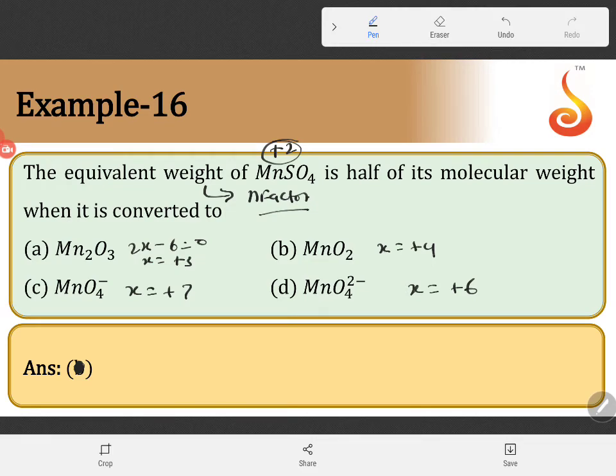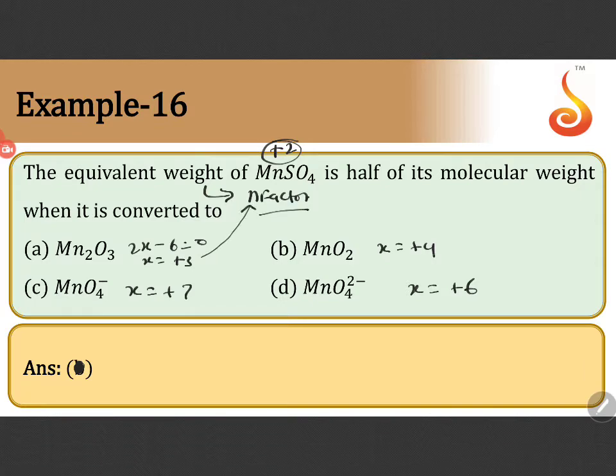So if you see change in the oxidation state, here 3 minus 2, you will get 1. Here change in the oxidation state, 4 minus 2, 2.